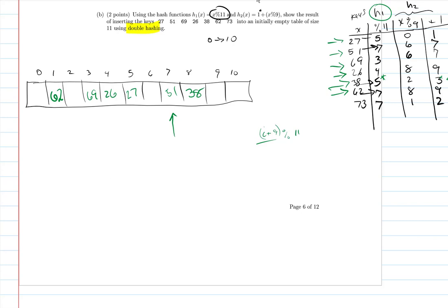And then let's do the same thing. We'll finish this up looking at 73. 73 maps to position 7. There's a collision, so we use the second hash function, which is a value of 2. So 73 ends up going right here.